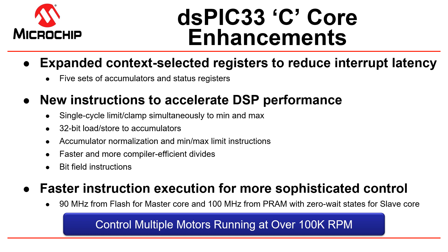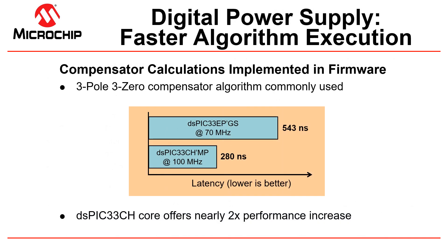For example, with these enhancements you can now control multiple motors at 100,000 RPM. A 3-pole 3-zero compensator algorithm, typically used in tight closed-loop control of digital power applications, can now be executed in 280 nanoseconds — nearly twice the performance of the previous generation. This enables implementing faster control algorithms essential for digital power applications using gallium nitride and silicon carbide power switches to achieve fast transient response.